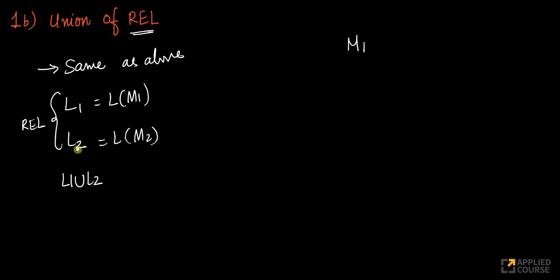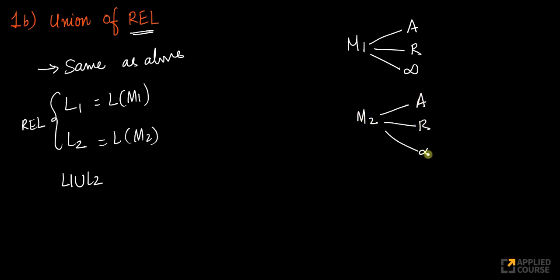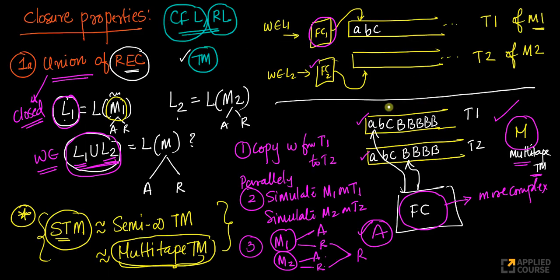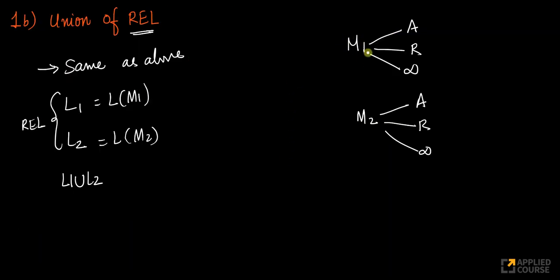I want L1 union L2. Just like before, I'll use the multi-tape Turing machine: on one tape I simulate M1, on the other tape I simulate M2. Whatever input word is given, I simulate it on tape 1 using M1 and on tape 2 using M2. My machine M takes W, simulates two tapes — one for M1, one for M2.